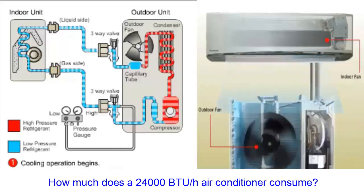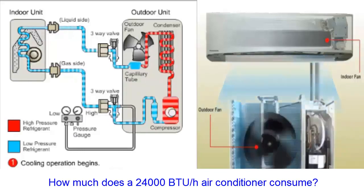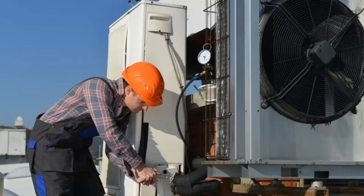Knowing how many amperes an air conditioner with 24,000 BTUs per hour consumes is essential for a refrigeration technician to assess the operation of the installed unit.